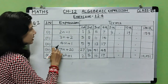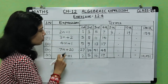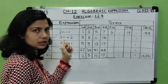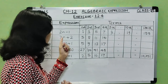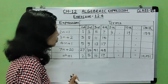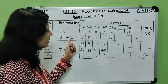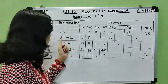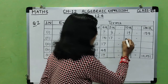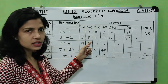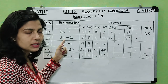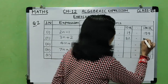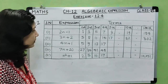For the expression 3n plus 2: the first term is already given. For the fifth term, put n equals 5: 3 into 5 plus 2 equals 15 plus 2 equals 17. For the tenth term, put n equals 10: 3 into 10 plus 2 equals 30 plus 2 equals 32. For the hundredth term, put n equals 100: 3 into 100 plus 2 equals 302.